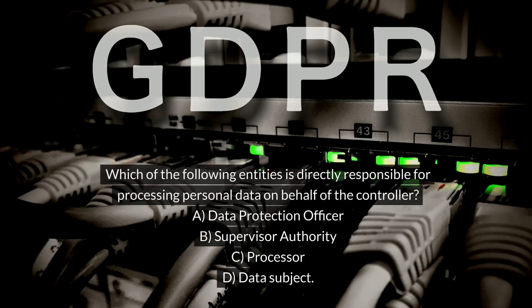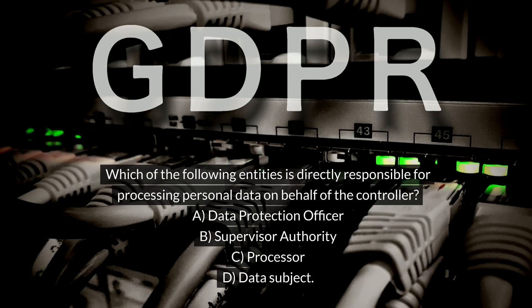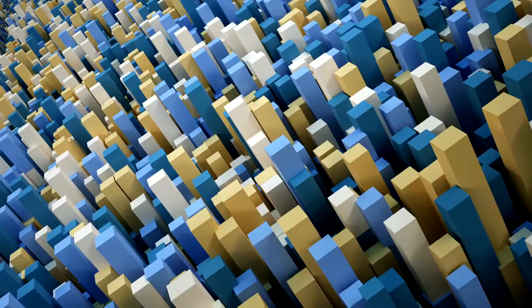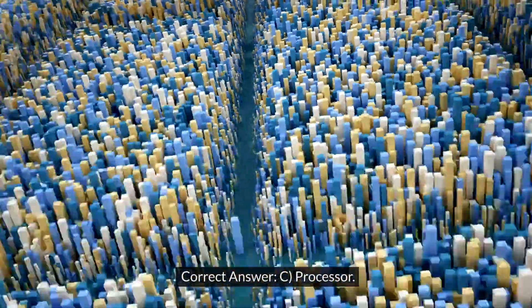Which of the following entities is directly responsible for processing personal data on behalf of the controller? A. Data protection officer. B. Supervisory authority. C. Processor. D. Data subject. Correct answer: C. Processor.